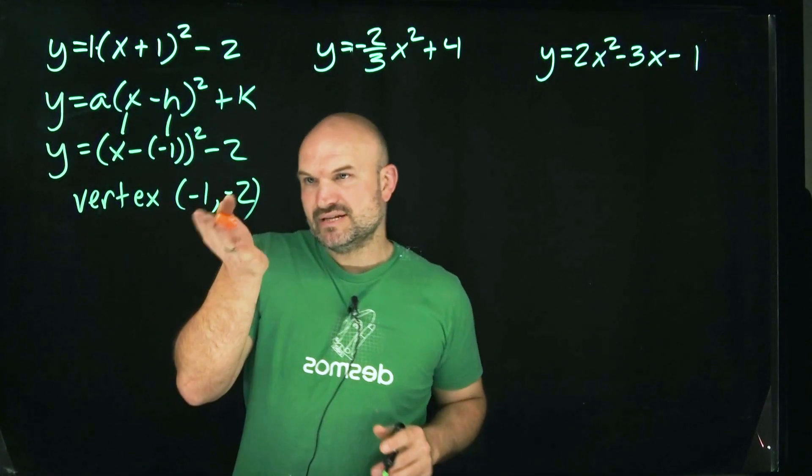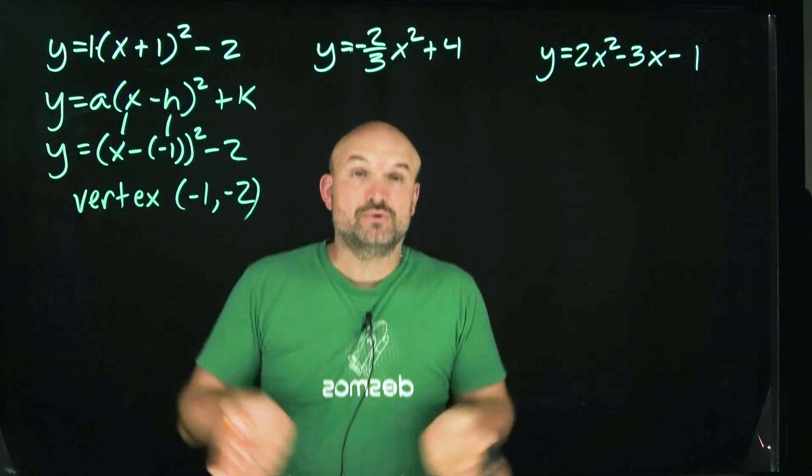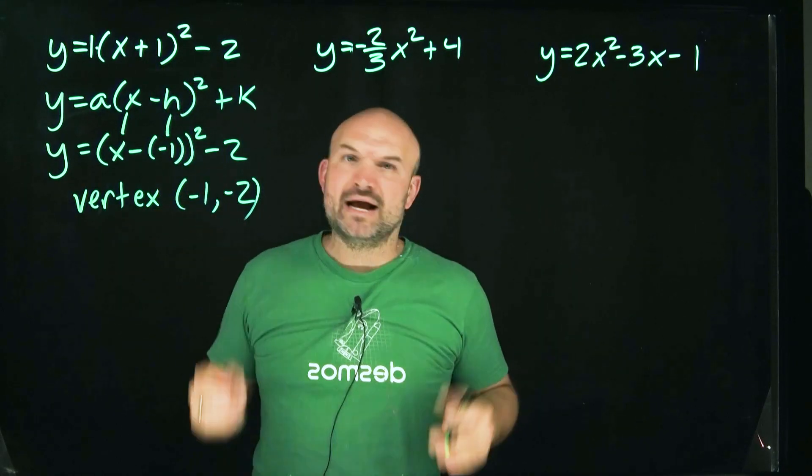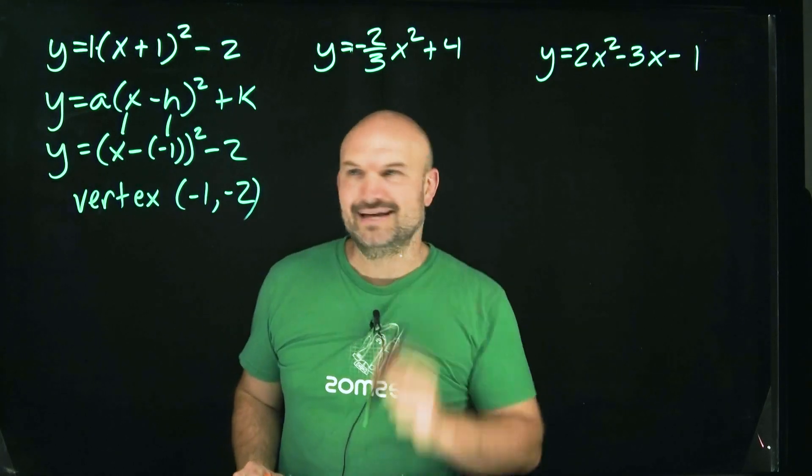And then to graph it, all we simply are going to do is plot that point. We know since a is positive, the orientation or the graph is going to open up. And we're not worried about any stretching or compression. If we wanted to find some points, we could plug it in. But we'll get to that in the next problem.